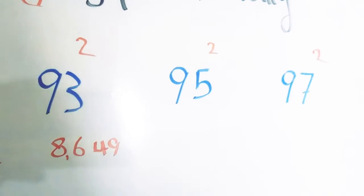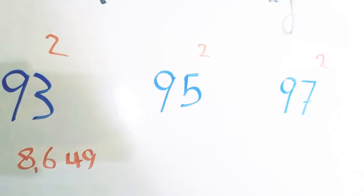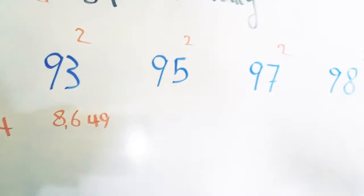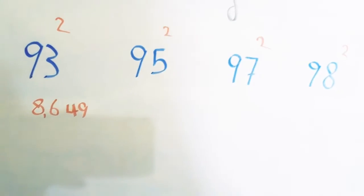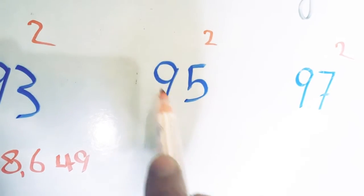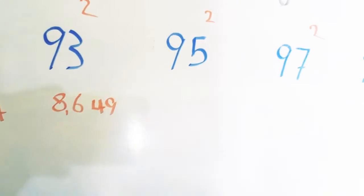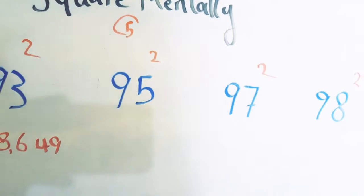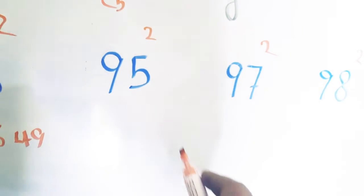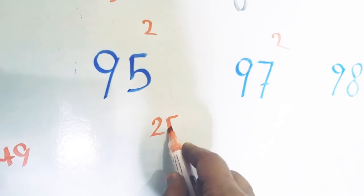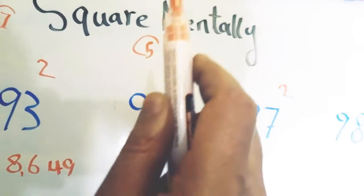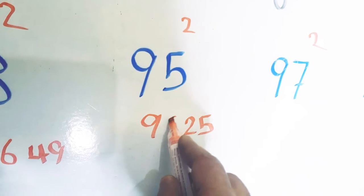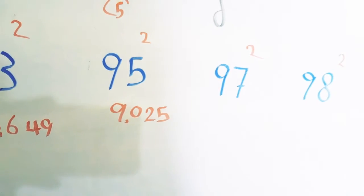We want to square 95. As you know, 95 is located between 90 and 100, so we can use the same trick mentally without any difficulty. The first step: we subtract 95 from 100 to get 5. We multiply 5 by 5 to get 25. Then we subtract this 5 from 95 to get 90. So the answer is 9,025.